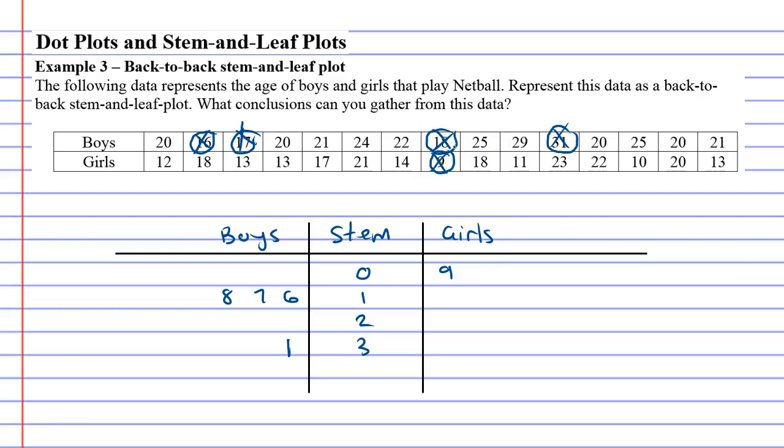Alright, next we'll do boys in the 20s and it looks like the rest of them are all in 20s. So we'll start with the number 20. There's actually 4 twenties. So we'll go 1, 2, 3, 4 and then we've got how many 21s? 2 twenty-ones. So we need two of them.